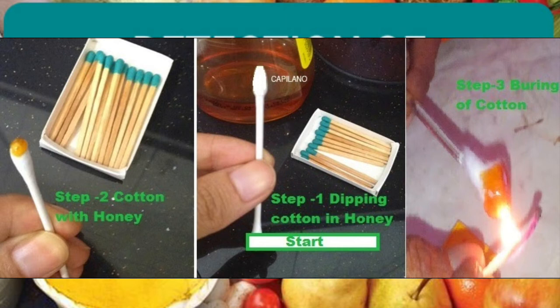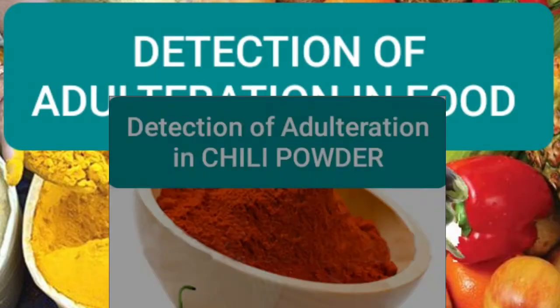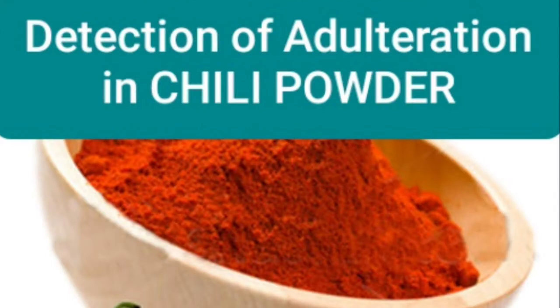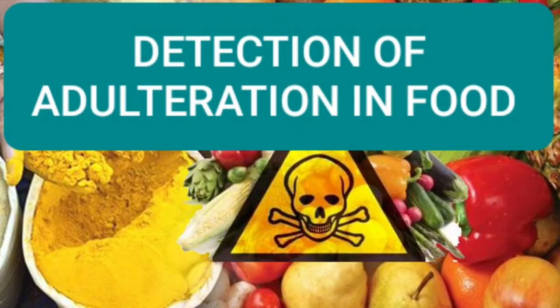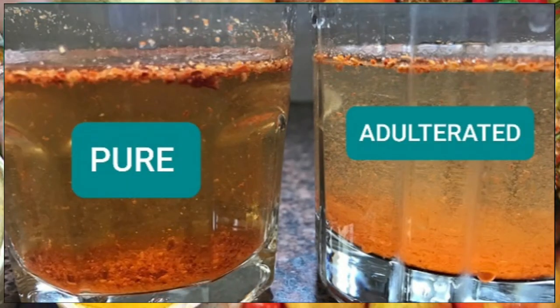Our next adulteration test is the determination of the quality of chili powder. For this test, add one or two tablespoons of chili powder into water, and after two to three minutes, if the chili powder is adulterated, a dark red color will appear. If the chili powder is pure, no extra red color will be formed.